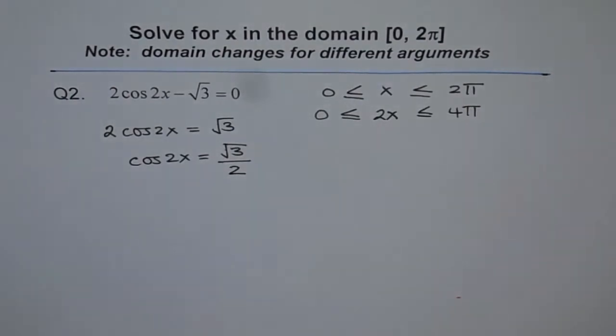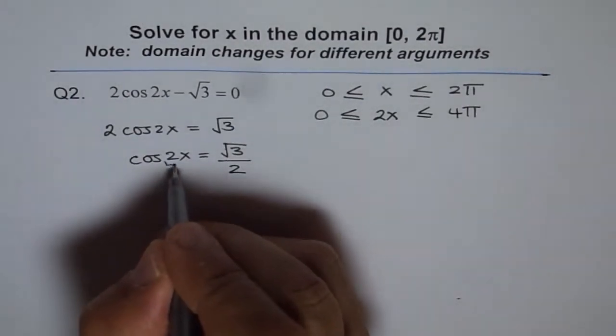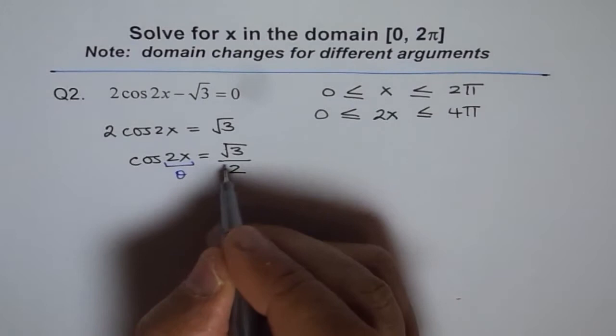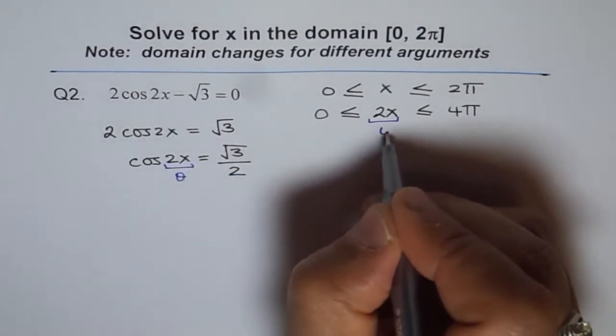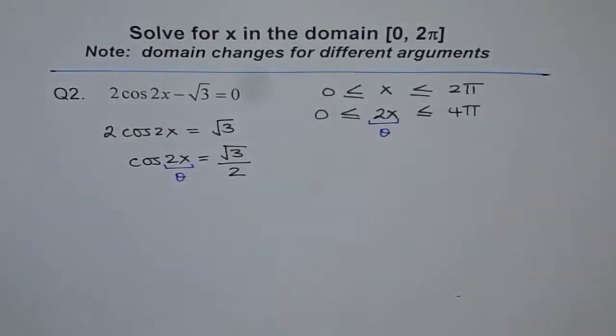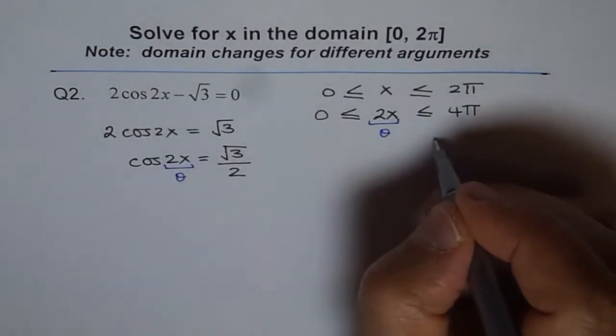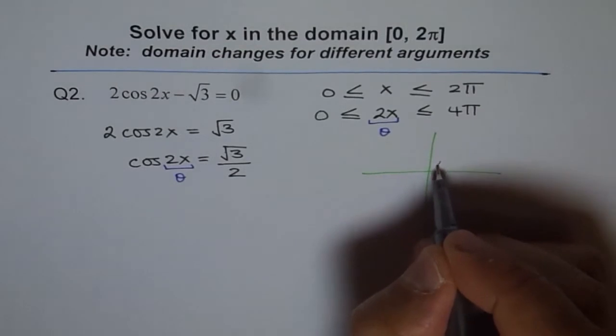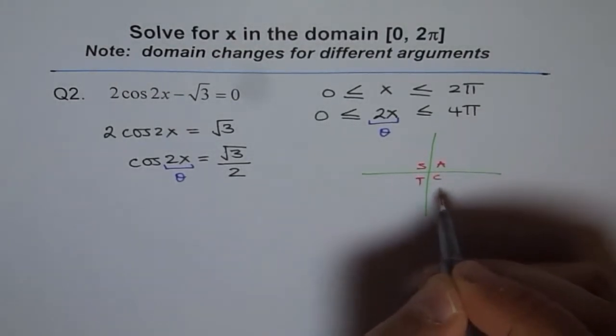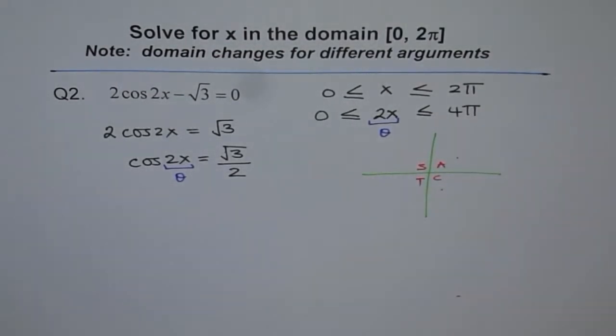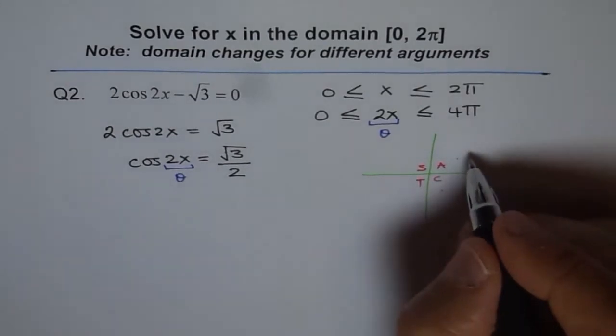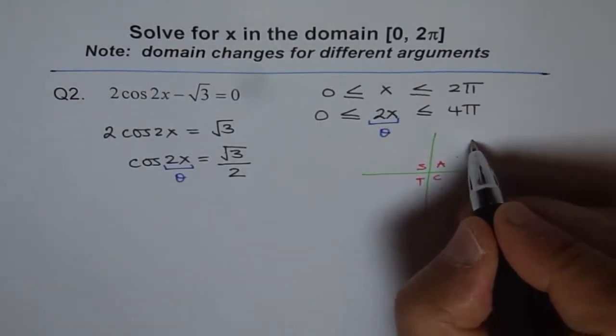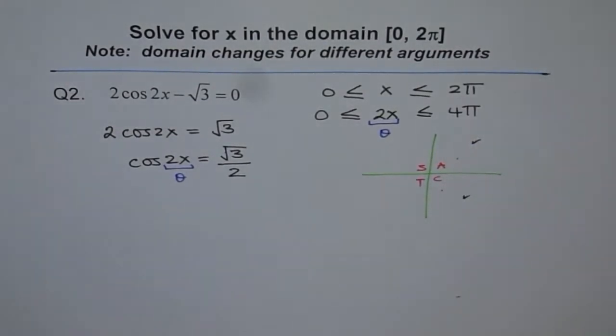Now think like this, that this is angle theta for us. Cos theta is square root 3 over 2. And you need positive value. So when will cosine be positive? If you know the cos rule, cos is positive here and here. And therefore, we are expecting two answers, one in this quadrant and the other one in this quadrant.